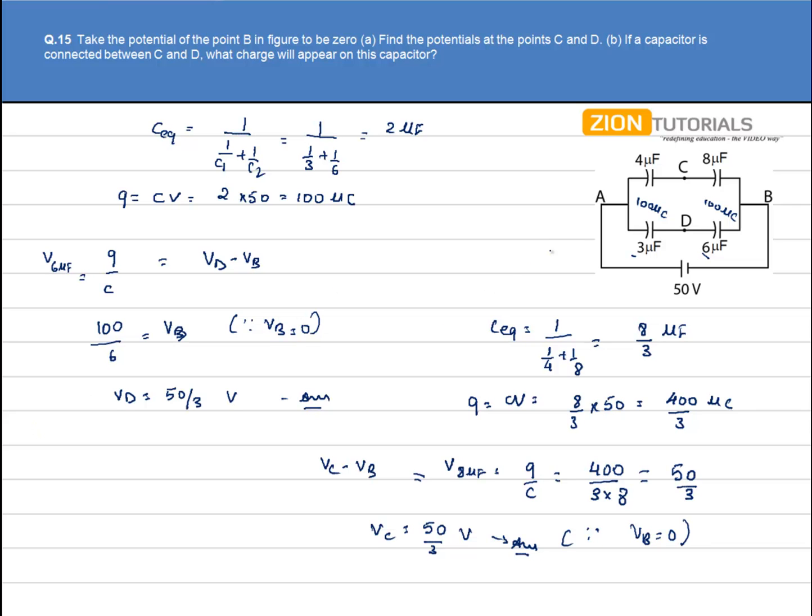Let's say I have a capacitor connected between C and D. The charge can be calculated as Q is equal to CV.